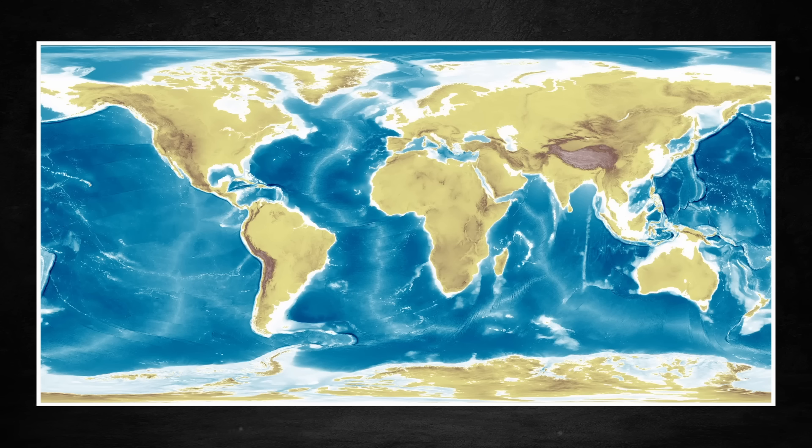Here is a global elevation map of the Earth. It shows both altitude differences in the land and the depth of the oceans.